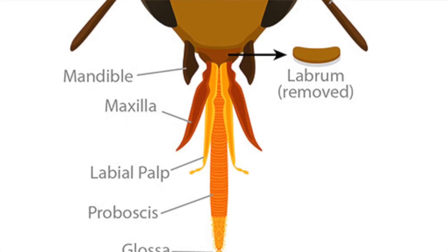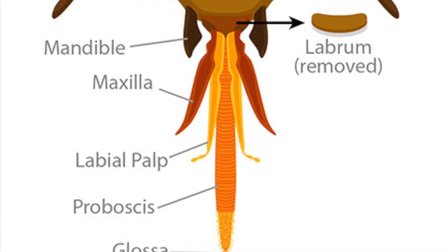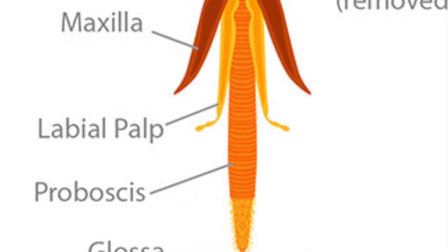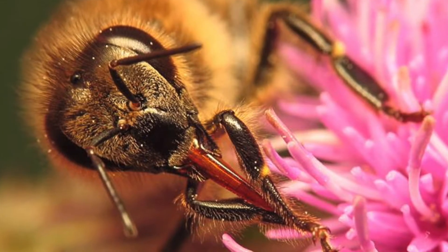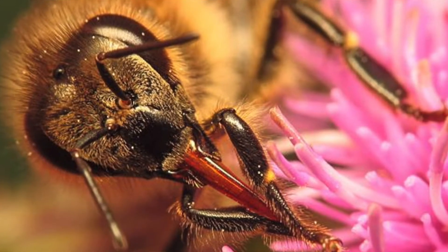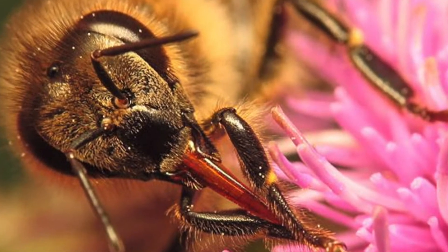We also have a proboscis. The proboscis is like a tongue. We use it for drinking nectar, honey, and water.